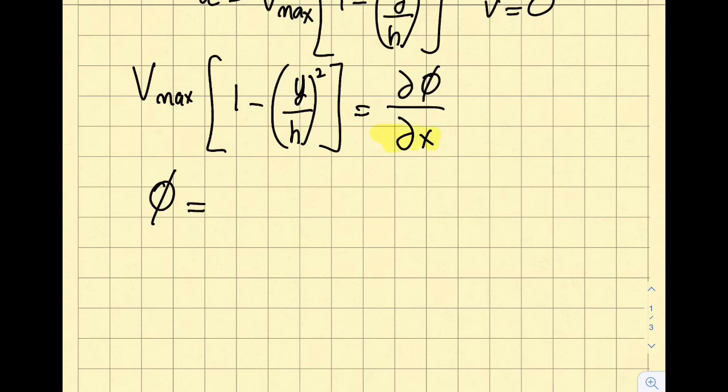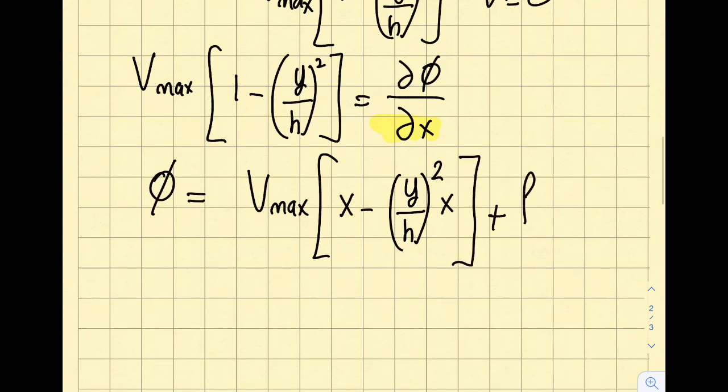I'm going to obtain V max, which is just a constant. This will give me x minus y over h squared times x plus f of y, because I account for x over here, I now account for y here. This is steady, so I don't have a t. If I had a t, I should include this here as well.